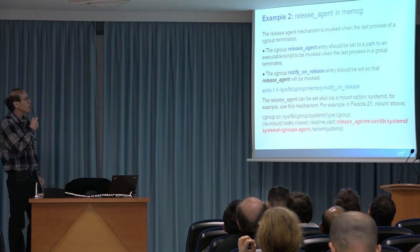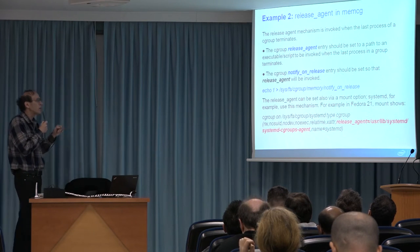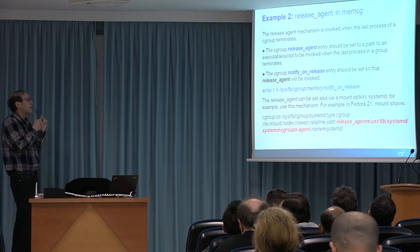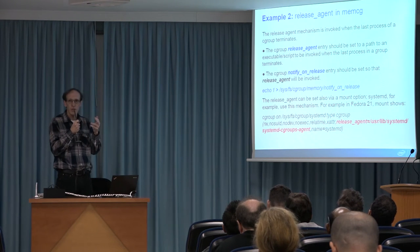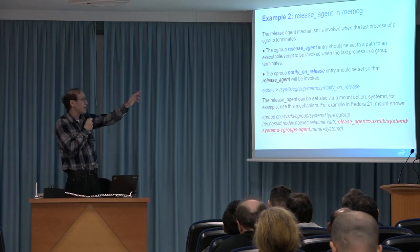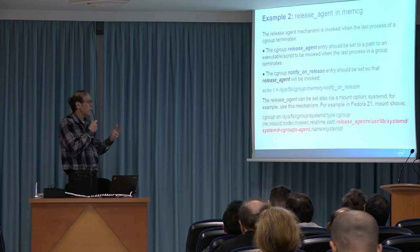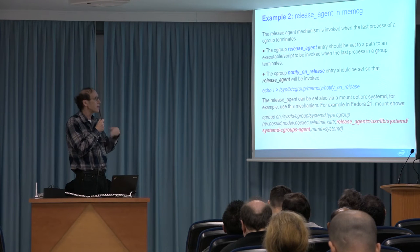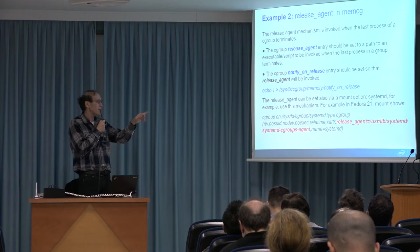The second example is the release agent. This example is also important for later when I discuss the parallel mechanism in Cgroup V2, which is different. The release agent is a mechanism by which you can define a handler to be invoked when the last process in a group is terminated. You simply set a handler for the release agent and then set notify_on_release to 1. When the last process in the group terminates, it will automatically invoke that handler. You can achieve the same result by mount option, as is done in system D.